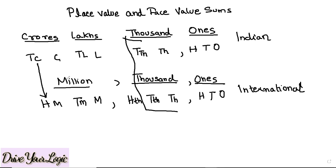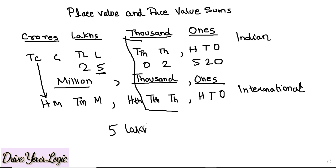Now we will learn what is place value and face value. Take any number — we generally work in the Indian system. Suppose I am taking 25 lakh. I am asking you: what is the place value of 5? What you do is write down directly 5 lakh, or you write 5 and then count how many digits come after it — 1, 2, 3, 4, 5 — and you put five zeros. So the place value is 5 followed by five zeros.